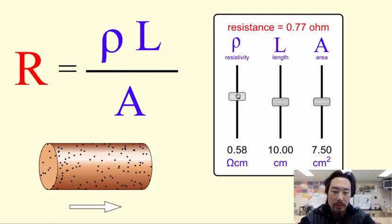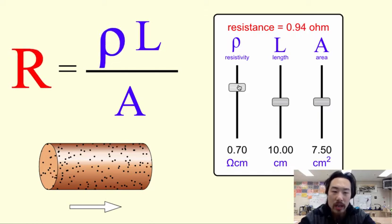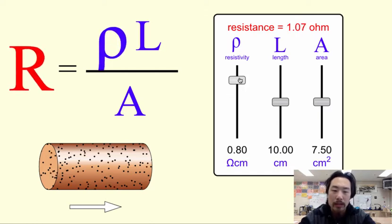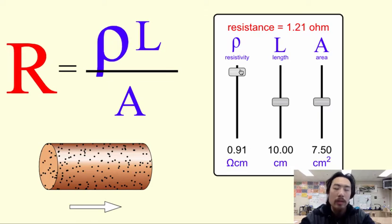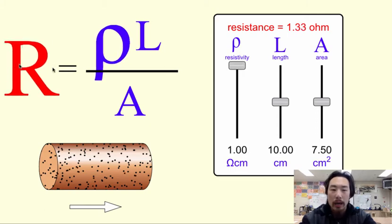So if I increase the resistivity, what you notice is that many more black dots are forming. And so what that just means is that the material is changing and is becoming more and more resistant. And so notice that as my rho increases, my capital R or my resistance also increases.